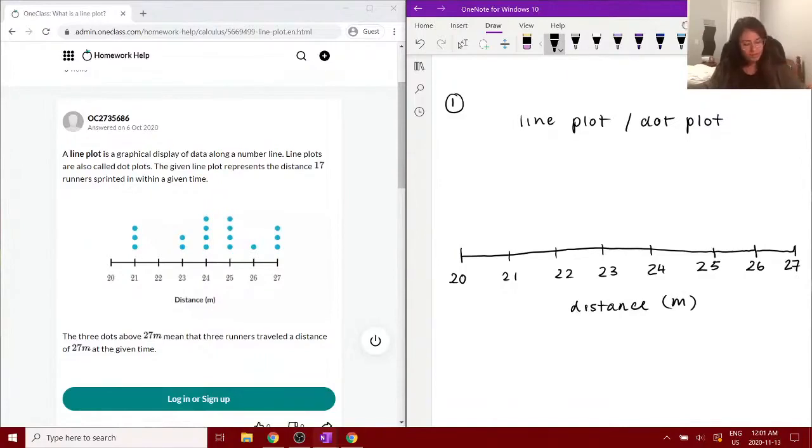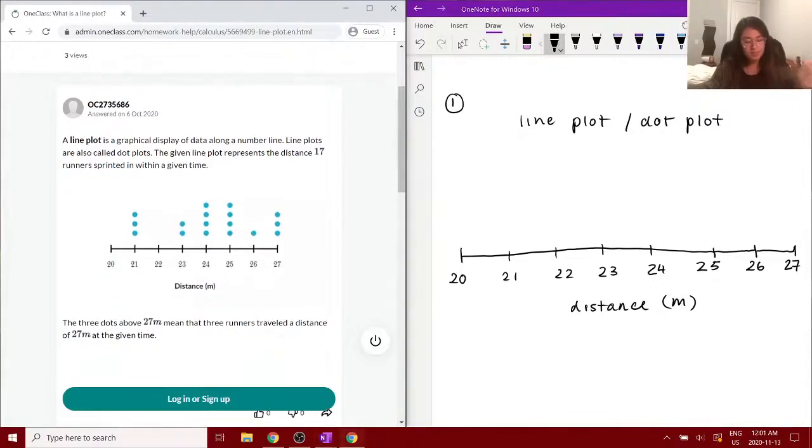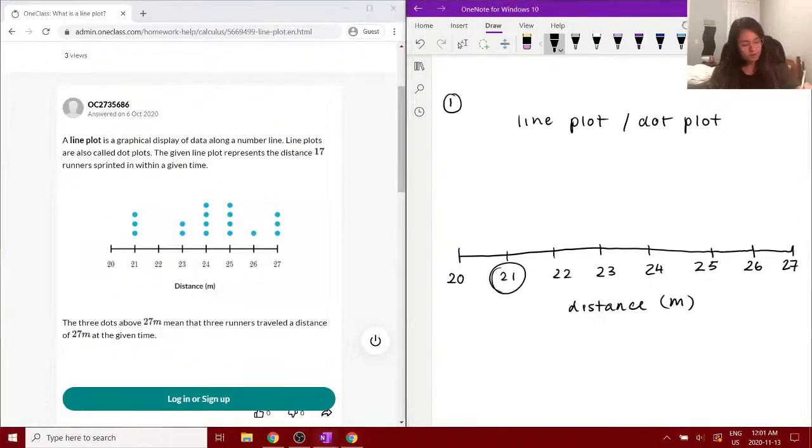As you can see, there's dots - like I said, 17 dots - and the 17 dots represent in this case 17 different runners. So three dots above the 21-meter mark represents three runners.